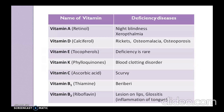Now we discuss the deficiency diseases associated with vitamins. Vitamin A, known as retinol, causes night blindness and xerophthalmia — xerophthalmia being dryness of the eye. Vitamin D, known as calciferol — related to calcium — causes rickets, osteomalacia, and osteoporosis, where bones soften and become brittle.